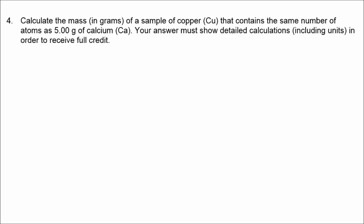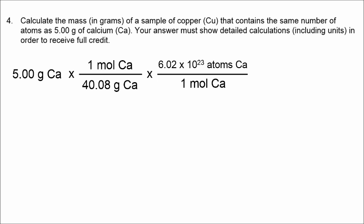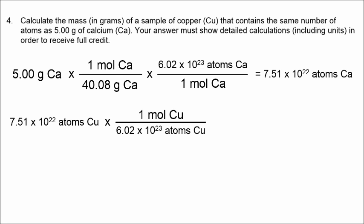In number 4, we have to calculate the mass of copper that contains the same number of atoms as 5 grams of calcium. First, let's convert 5 grams of calcium into moles. So, the periodic table tells us that one mole of calcium has a mass of 40.08. Then, we can convert moles of calcium into number of atoms using Avogadro's number. And we get 7.51 times 10 to the 22nd atoms of calcium. That same number of atoms of copper would have to be converted back into grams of copper. So, we're going to use Avogadro's number to convert from atoms to moles. And then, we'll use the periodic table and discover that one mole of copper has a mass of 63.55 grams. So, our final answer is 7.93 grams of copper.